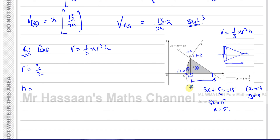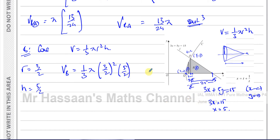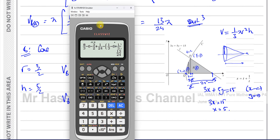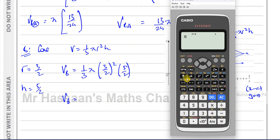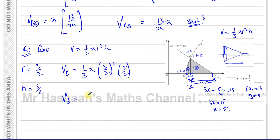The volume of a cone is (1/3)πr²h. Here r = 3/2 and h = 5/2. So the volume of Part B is (1/3) × π × (3/2)² × (5/2) = (1/3) × π × (9/4) × (5/2) = 15π/8 cubic units.